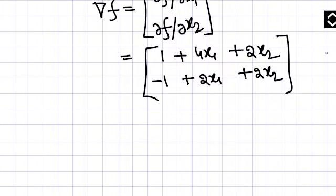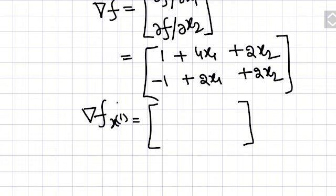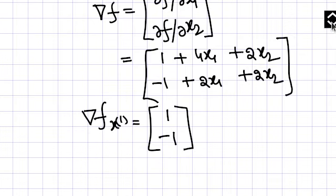Now the gradient at the given point, what is that point? That is at this point. So you will put 0 comma 0, zero zero is the point. So here you put 0 0 0. So what you will get? You will get [1, -1]. This is the gradient of the function at that point.